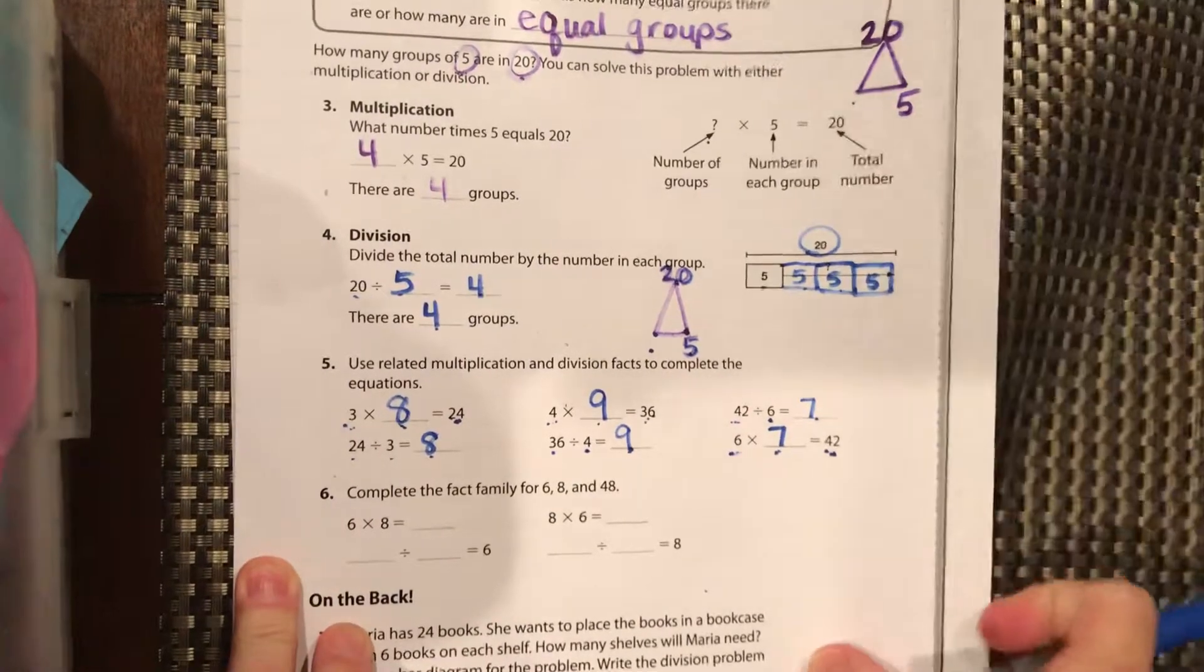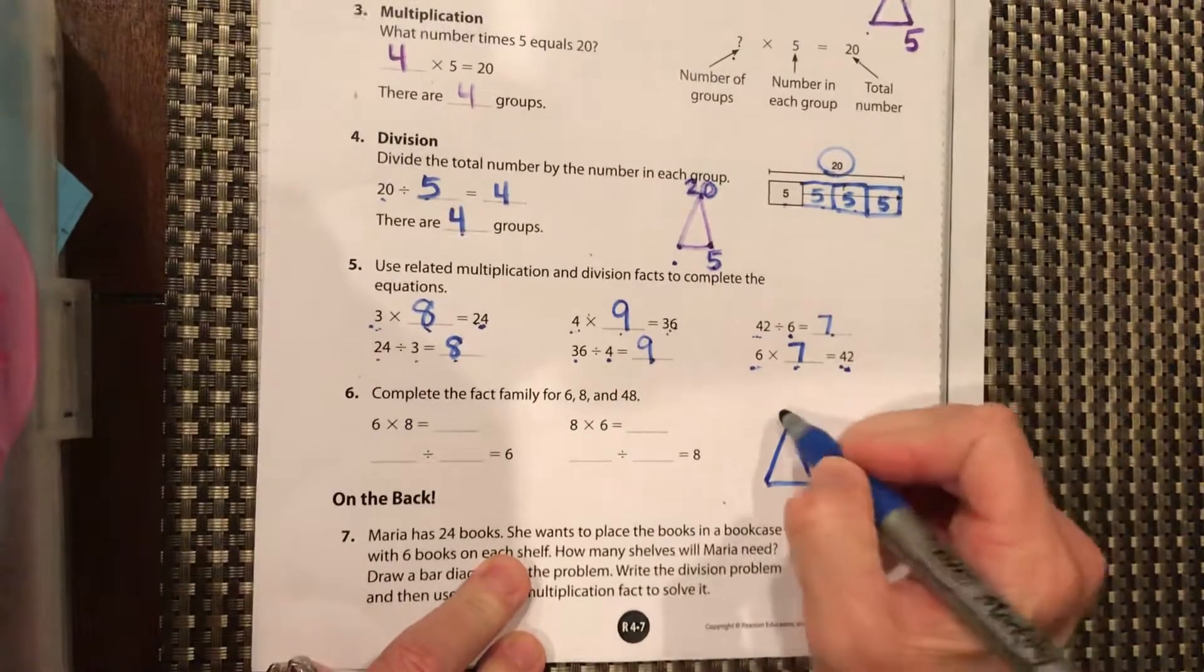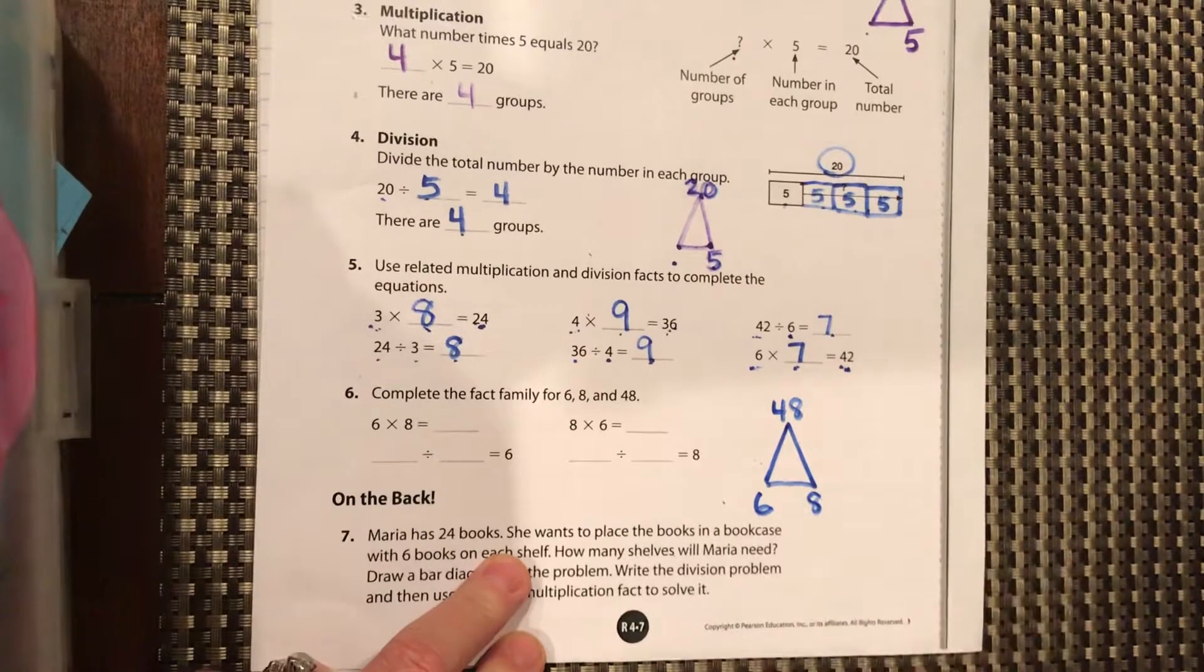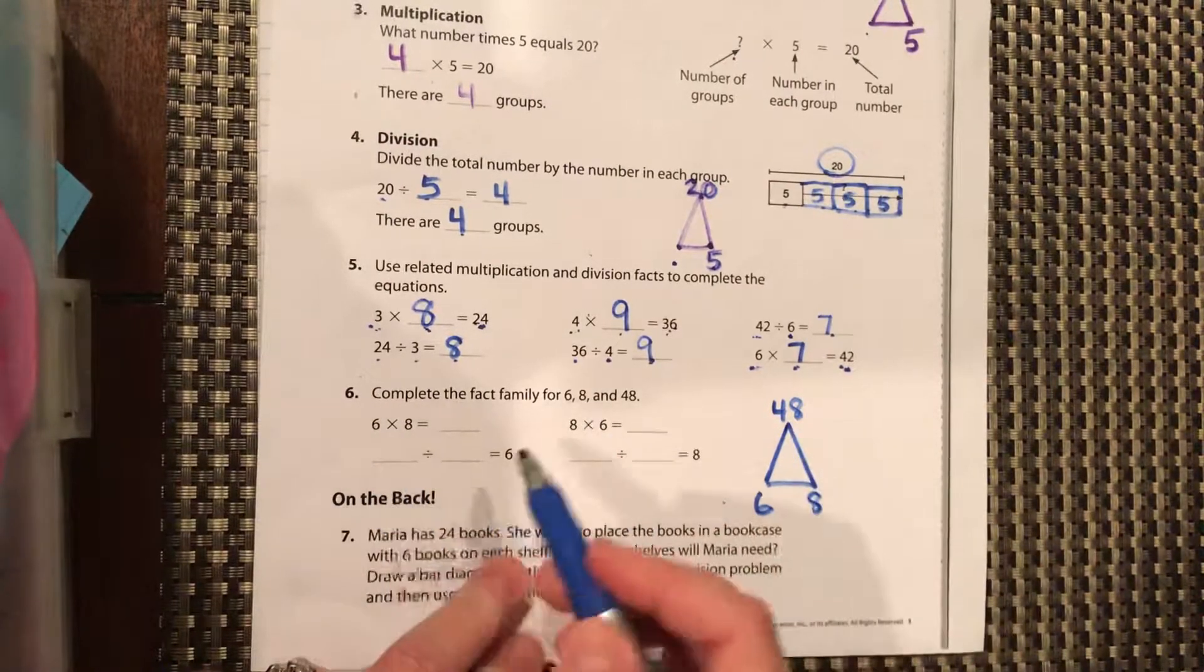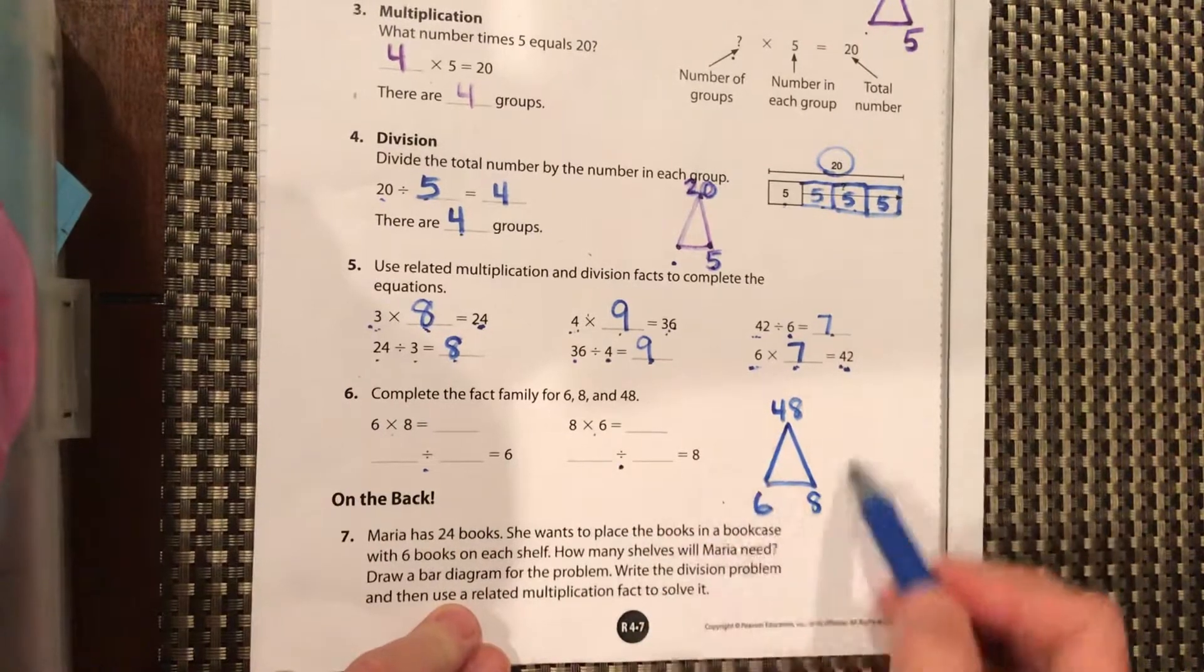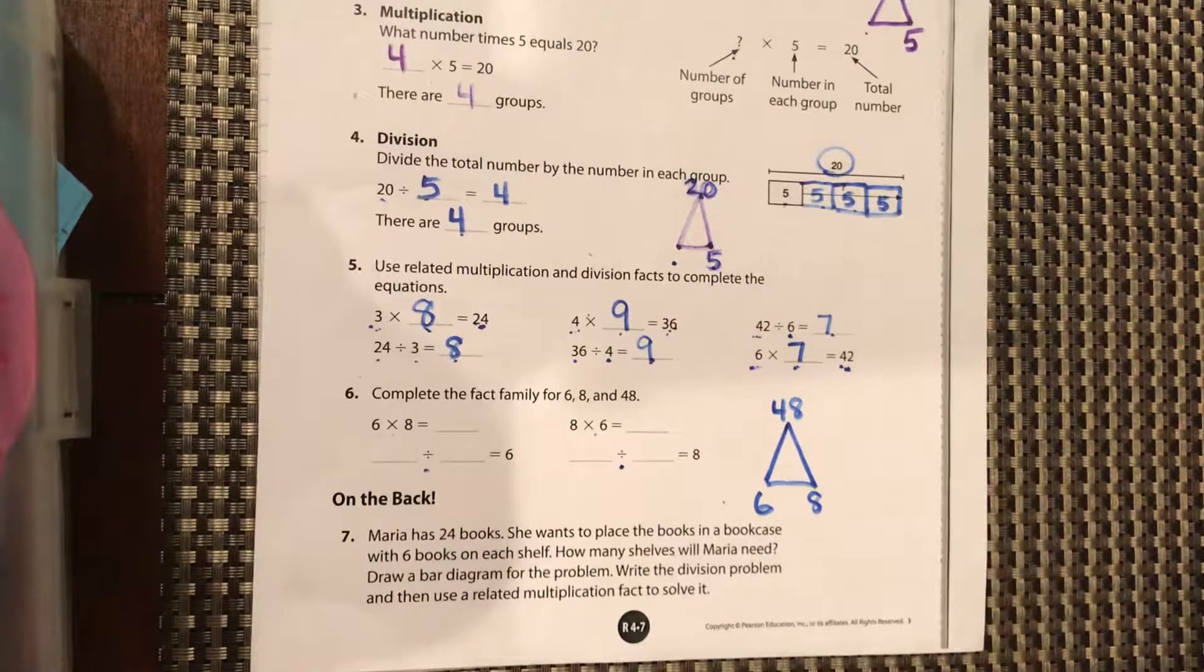Complete the fact family for six, eight, and 48. Draw your triangle over here. 48 goes on the top and you have six and eight. So pause the video. Using this, fill out your two multiplication and your two division problems using the fact family of six, eight, and 48.